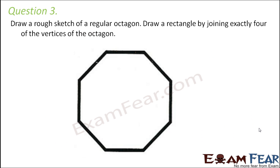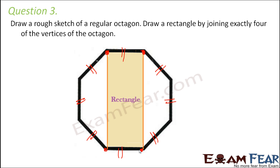Question number three: Draw a rough sketch of a regular octagon. Octa means eight, so a polygon with eight sides. It is a regular octagon, so all the eight sides are equal in length. Draw a rectangle by joining exactly four of the vertices of the octagon. So if you consider these four vertices one, two, three, and four, and if you join them like this, what do you get? You get a rectangle. So in this fashion we can draw a rectangle inside an octagon.